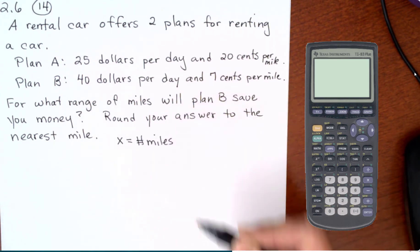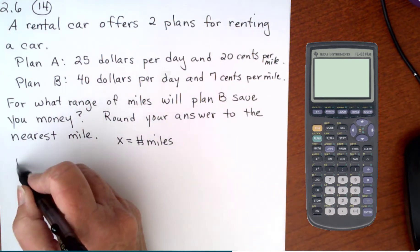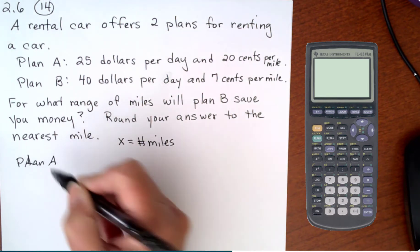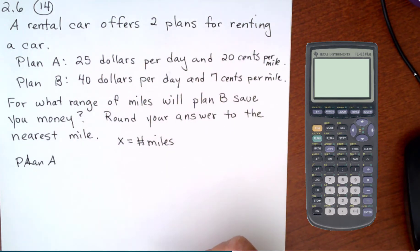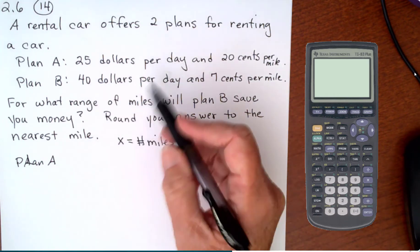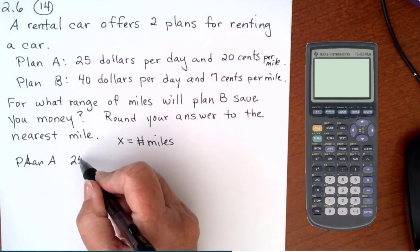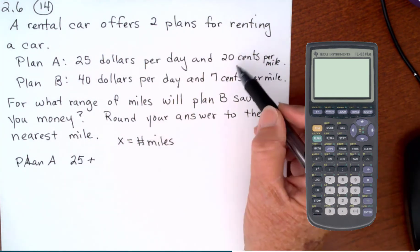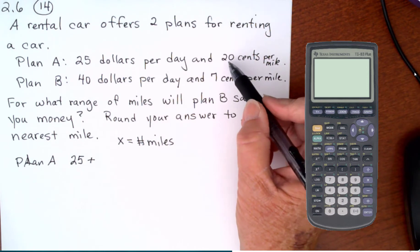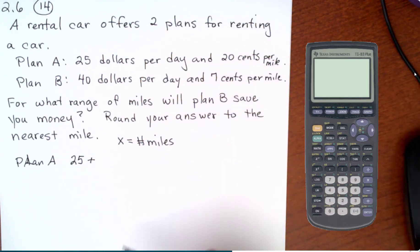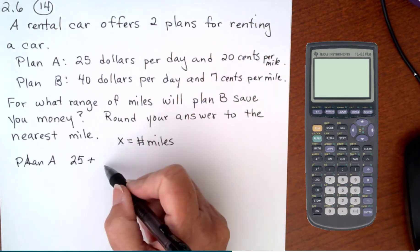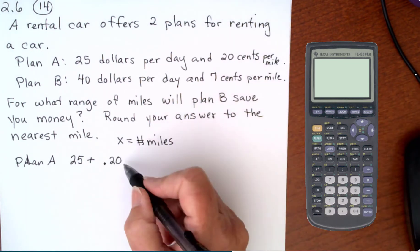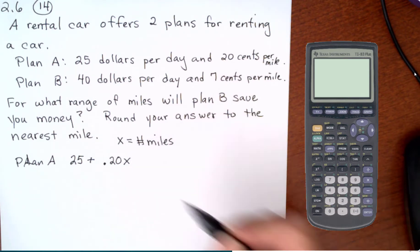And then we need an expression for each plan. So Plan A. $25 per day. So that's a fixed cost for the day. Plus, and that's in dollars, so we need to put this notation for 20 cents. It has to be in the same form, so it needs to be 0.20 per mile. So this would be times your number of miles.